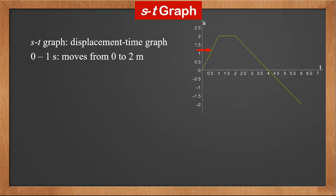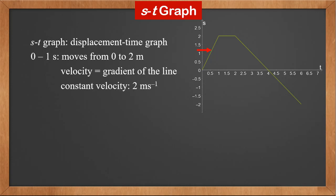From 0 to 1 second, the object's displacement increases from 0 to 2 meters. It's a straight line, so it moves at a constant velocity. The velocity is the gradient of the line, which is 2 meters per second.